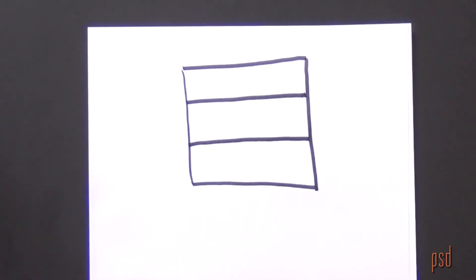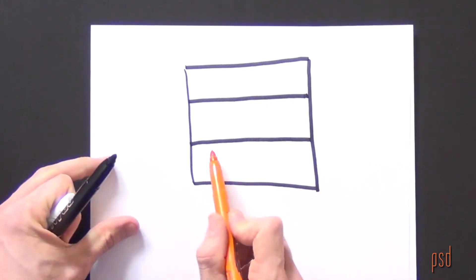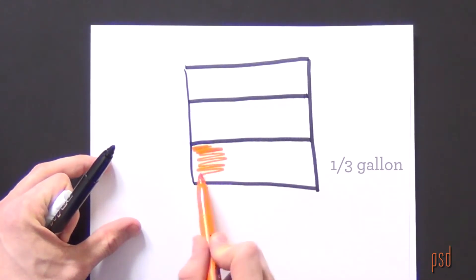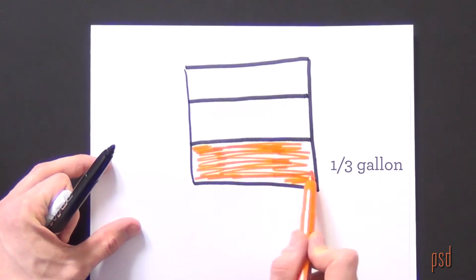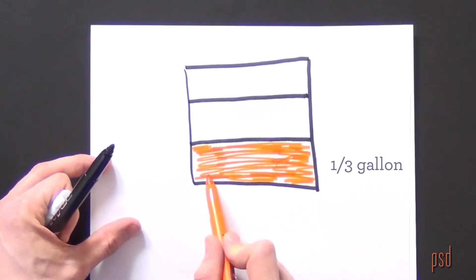I know that Mr. Rodriguez purchased one-third of a gallon of ice cream. So I'll shade this here to represent one-third of a gallon.